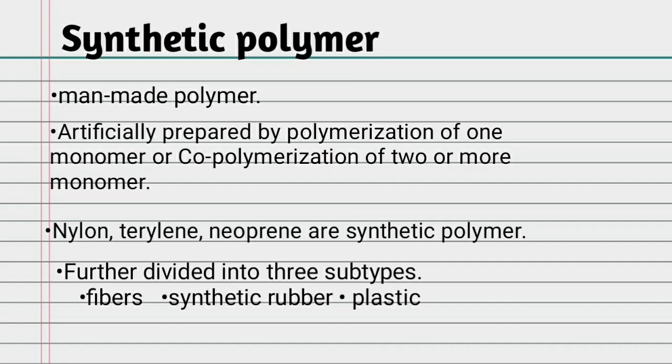Synthetic polymers are formed by the polymerization of one or more monomers with repeating units. A co-polymer uses two or more monomers with repeating units. Examples of synthetic polymers include nylon, terylene, neoprene, and other synthetic polymers.